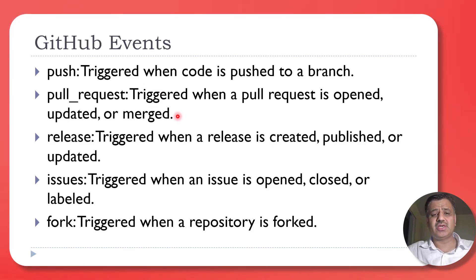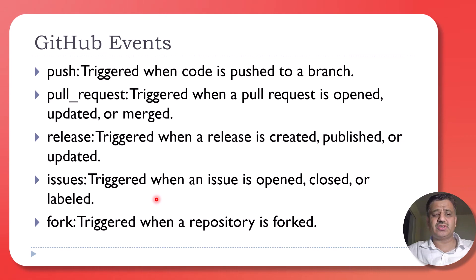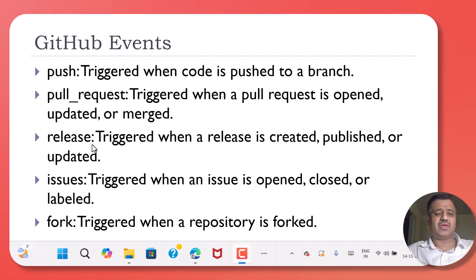A pull request event is triggered when a pull request is opened, updated, or merged. A release event triggers whenever a release is created, published, or updated. Issue events fire whenever an issue is opened, closed, or labeled, and a fork event triggers whenever a repository is forked.